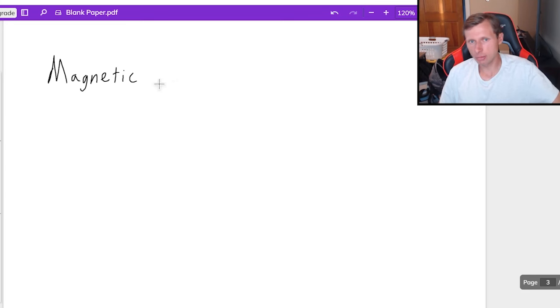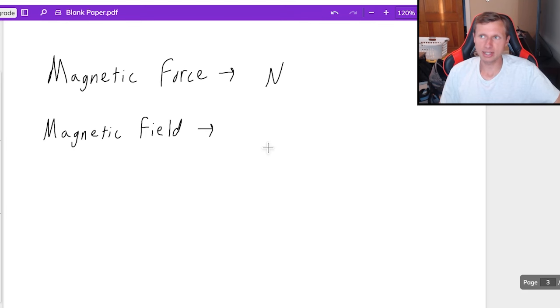So first we need to talk about the magnetic force. Since it's just a force, the units are newtons. Very simple. And then we have the magnetic field. In other words, the magnetic force acting per unit charge.